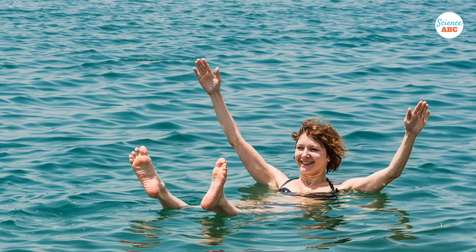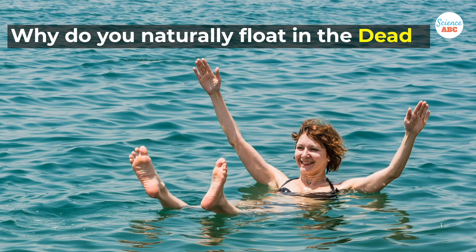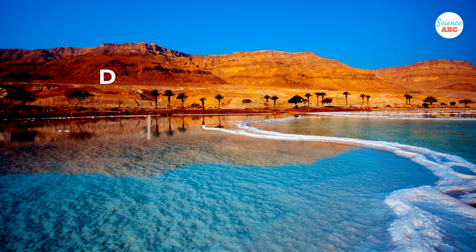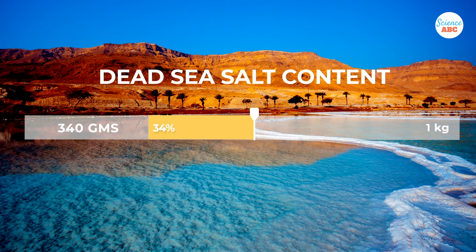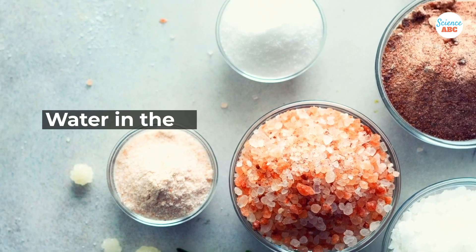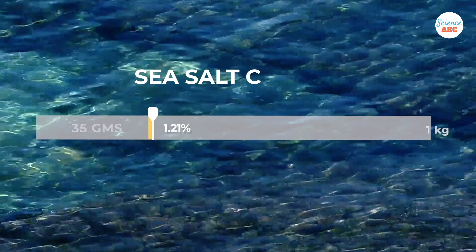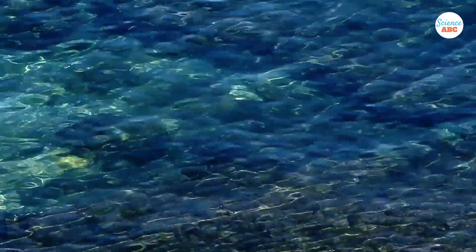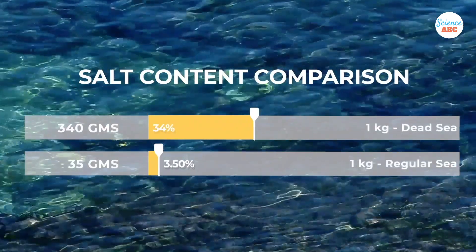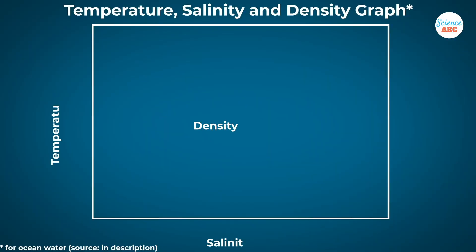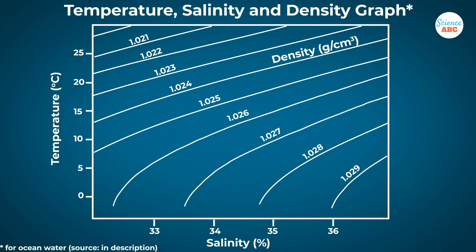Now, the main question is why do you naturally float in the Dead Sea? The science behind this, again, lies in the high salinity. With more than 340 grams per kilogram salt content, along with a high amount of other minerals, the water in the Dead Sea is denser than other water bodies. On average, seawater contains 35 grams per kilogram of salt. As you can clearly see, the Dead Sea water is roughly 10 times saltier than what we find in other water bodies. There is a direct relationship between salinity and density: the higher the salinity, the greater the density of the water.